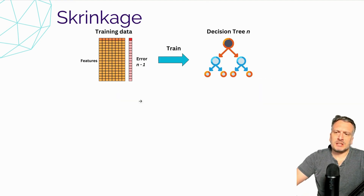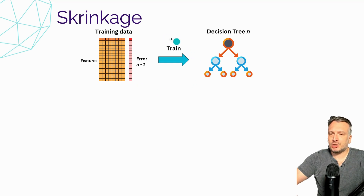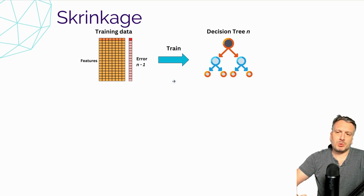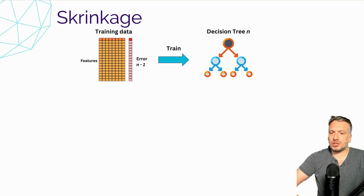Let me introduce the concept of shrinkage. XGBoost uses this technique to make sure that newly added trees are not overly impacting the previous predictions. Each new tree added may introduce some errors to the original predictions, so we want to add trees in a conservative manner. Instead of considering all predictions of each tree equally, we are going to shrink the predictions of the correcting trees.